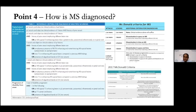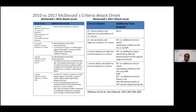The advantage of making a quick diagnosis is that treatment can be started early, helping to prevent progression and accumulation of disability. The 2017 criteria make it easier to reach a diagnosis quickly compared to the 2010 criteria, allowing a definite diagnosis even with a single episode of the disease.